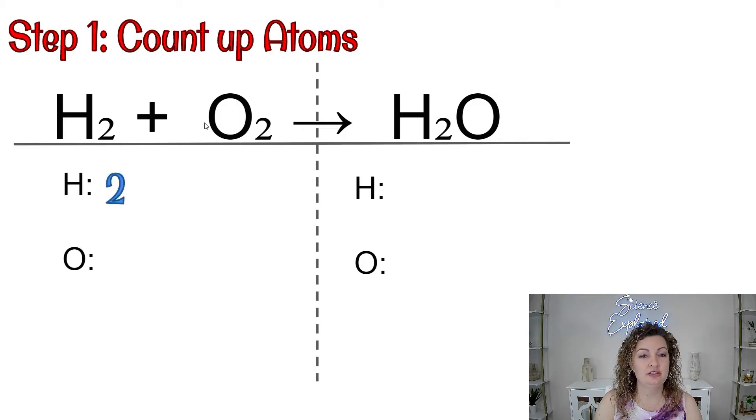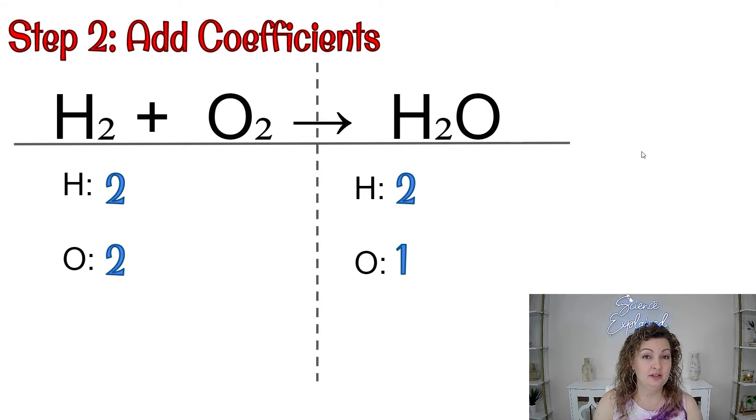Over here we have two H's and we have two O's, and then we have two H's and one O. So now we're going to add coefficients in order to balance them on both sides, right?